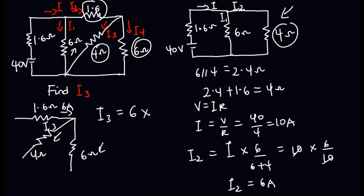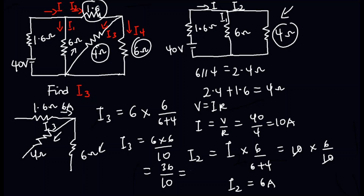Using current division: i3 equals 6 amperes times 6 ohms divided by 6 plus 4, which is 10. So i3 equals 6 times 6 over 10, that is 36 over 10, which equals 3.6 amperes. Therefore, 3.6 amperes is the current flowing through the 4 ohms resistor, which is i3.